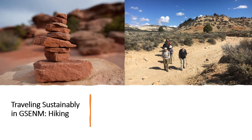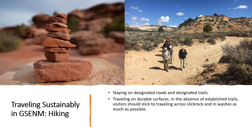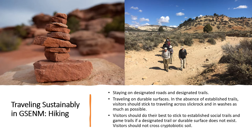Visitors can move across desert landscapes with minimal damage while hiking, driving, or biking by staying on designated roads and trails. They should not cut switchbacks and not hike next to the trail, even if it's muddy. Many of the trails in GSENM are not signed and can be hard to follow, so visitors should make sure they are prepared with a map, GPS, compass, and the knowledge of how to use them so they can stick to the trail. In the absence of established trails, visitors can stick to traveling across slickrock and in washes as much as possible, as these surfaces are durable and will not be degraded by travel across them. Visitors should do their best to stick to established social trails and game trails, and should not cross cryptobiotic soil if a designated trail or durable surface does not exist.